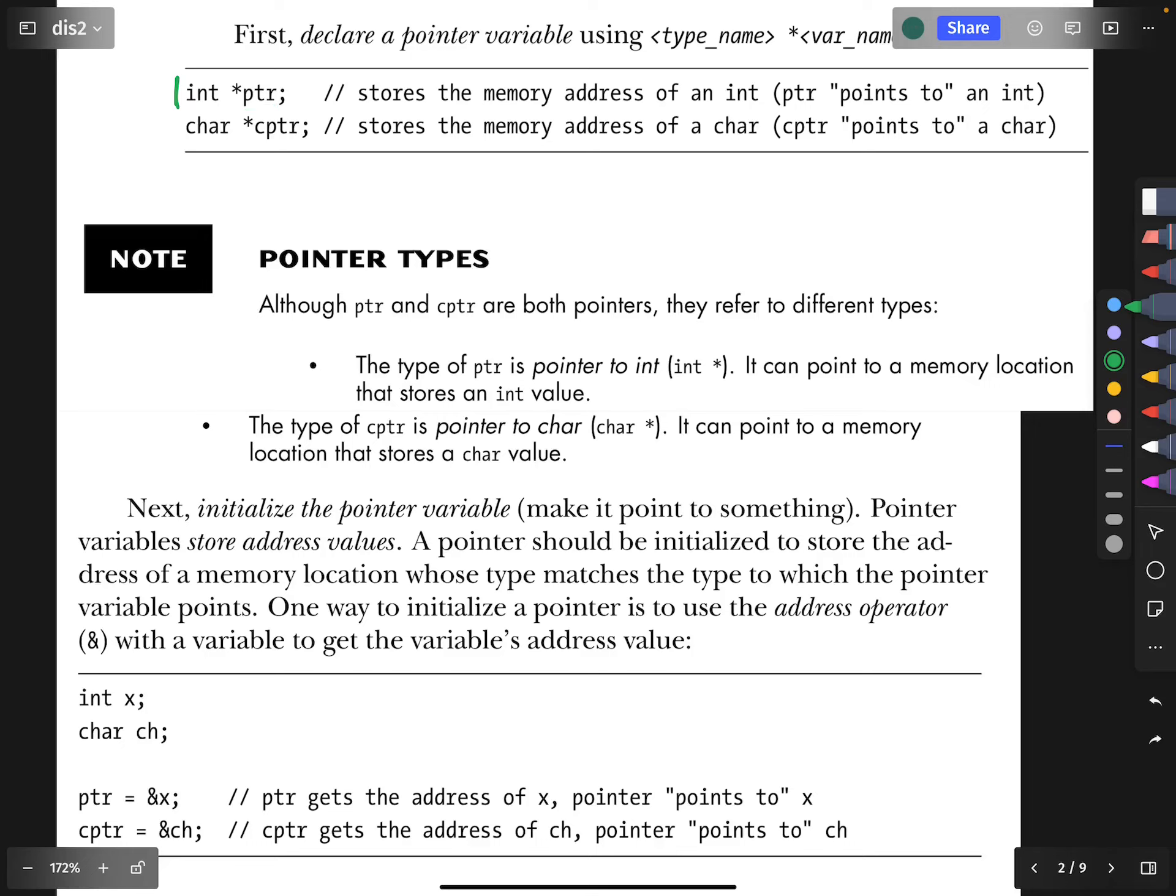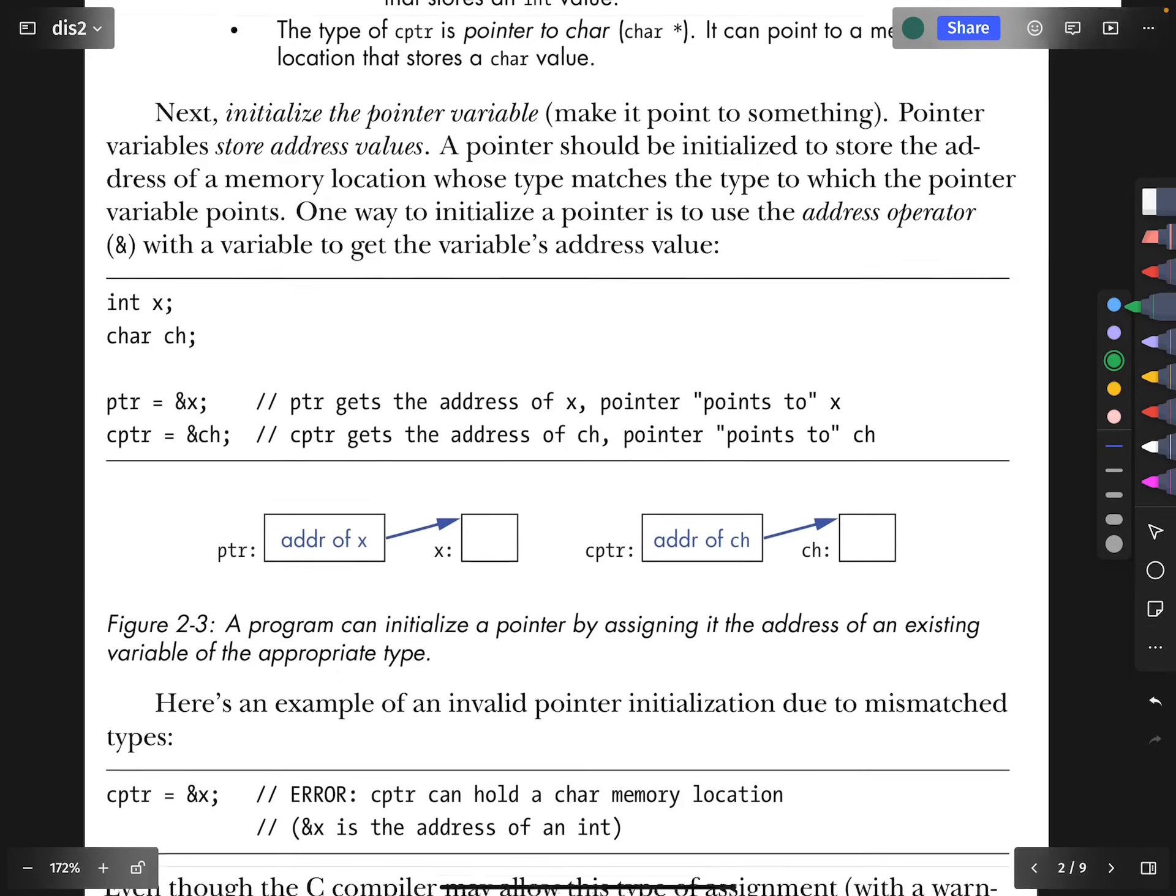I believe the spacing here is actually flexible so that you could call it int star space ptr, and I think other possibilities exist as well, but this is a fairly standard convention for how to write the syntax, int space star ptr. This declares that ptr is a variable that holds an address, and that address is the address of an integer. That's what the int part is doing there.